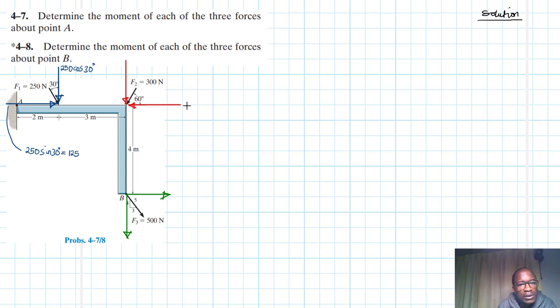Then here we have 300 cos 60. And we know what cos 60 is, it's also 0.5, so this is 150. This one is 300 sin 60.